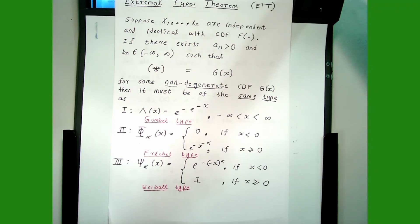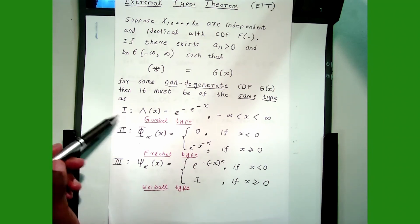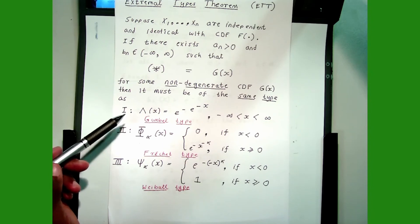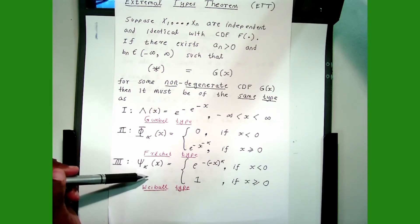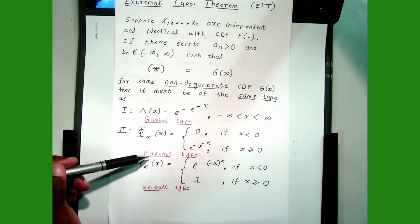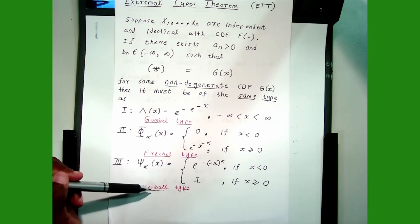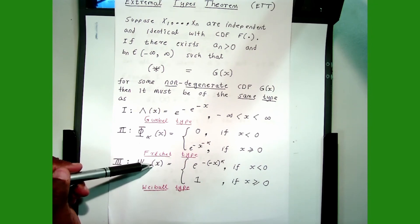In the next video, I will talk about how to figure out which of the three types will be attained. What this ETT says is that if the limit exists, then G must be one of the three types. But how do you know which one? Is it going to be Gumbel type, Fréchet type, or Weibull type? And how do you check that? I will talk about that in the next video.